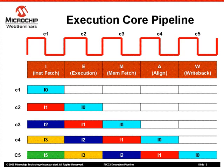The bottom half of the slide illustrates how instructions proceed in the pipeline. Assume C1 is the very first clock the CPU is executing. During C1, instruction I0 is fetched and the remaining 4 stages are empty. During C2, I0 moves to the E stage and I1 is fetched. During C3, I0 and I1 move to M and E stages respectively, while I2 is fetched. In C4, 4 stages of the pipeline are full, and in C5, all 5 stages are full. From now on, the pipeline will execute one instruction every clock cycle, given that there are no stalls.